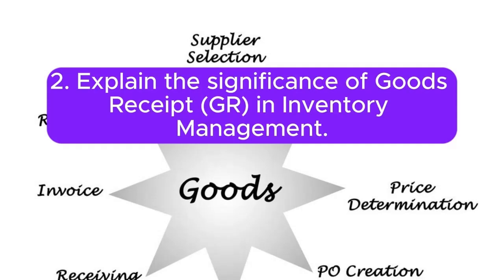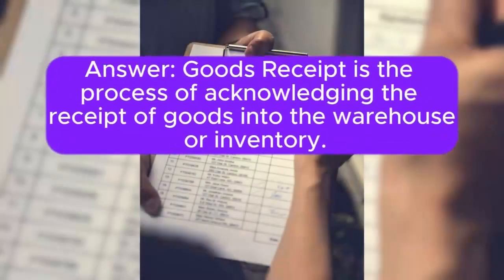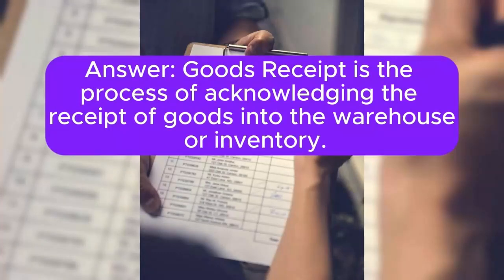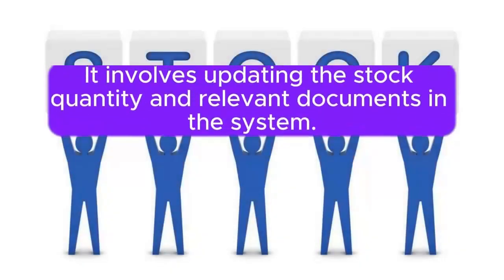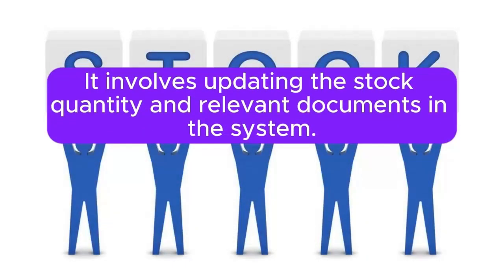Question 2: Explain the significance of goods receipt (GR) in Inventory Management. Answer: Goods receipt is the process of acknowledging the receipt of goods into the warehouse or inventory. It involves updating the stock quantity and relevant documents in the system.